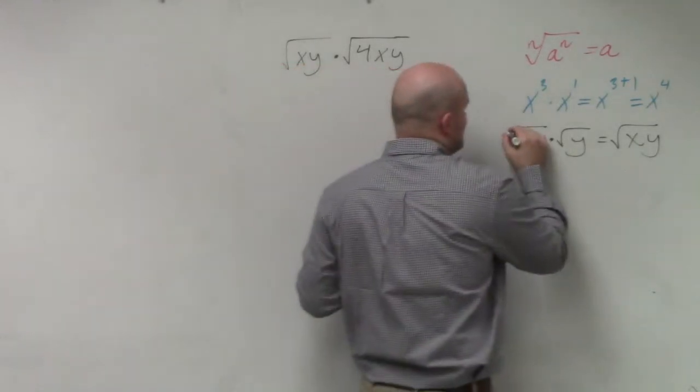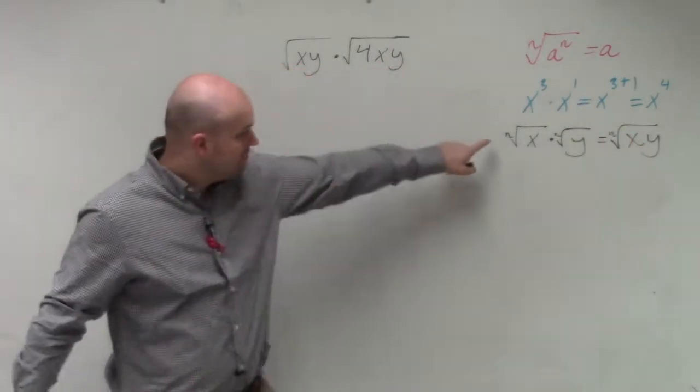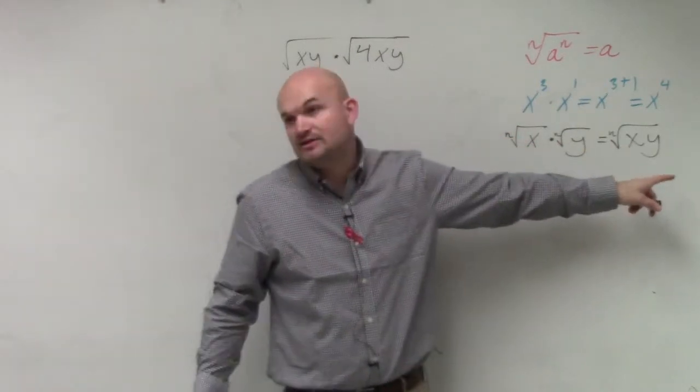as long as—I'm sorry, I should have written this down. As long as the index is the same, then McKenzie, you can just multiply the two radicands.